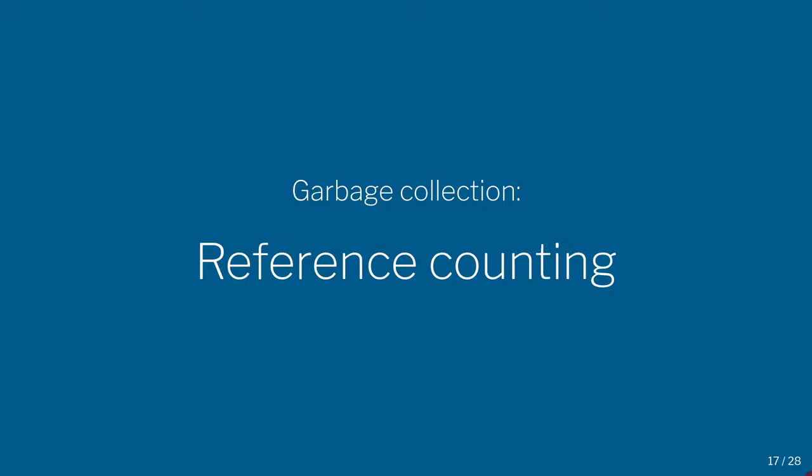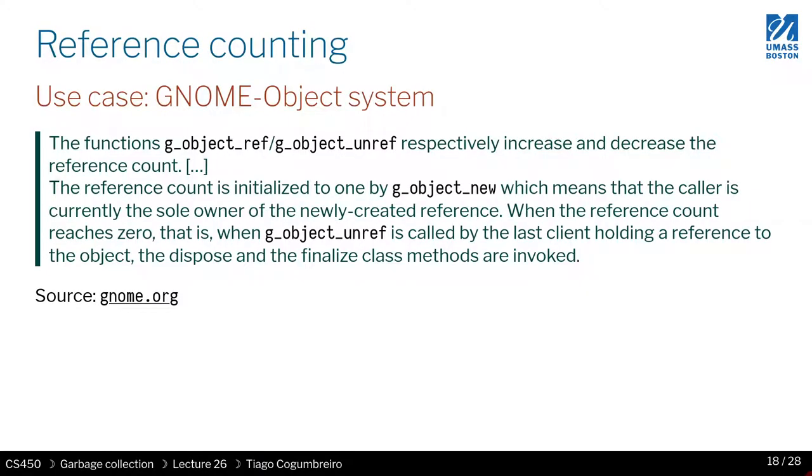One well-known form of garbage collection is reference counting. The idea behind it is that each region of memory is annotated with a number, a counter. Whenever you need to use said memory, you will increment the counter, and when you're done with it, you decrement the counter. If at any point the data you're referring to reaches zero, then the garbage collector will reclaim that data.